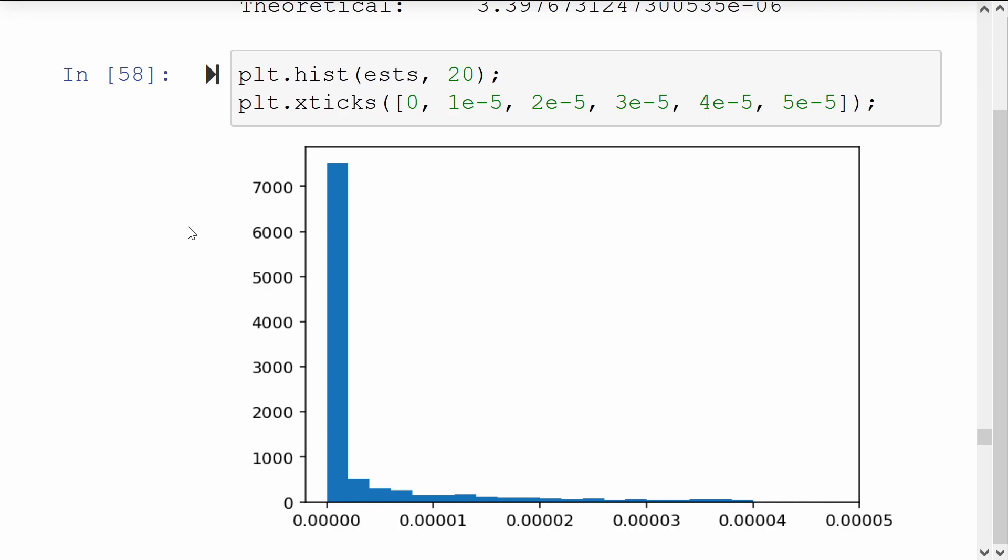With importance sampling, we allow ourselves to return a real valued number here instead. It will have the same mean, but it can take values which are non-integer.